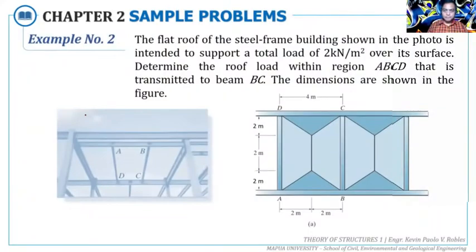Okay, so let's have this example. We have this flat roof of a steel frame building shown in the photo. It's intended to support a total load of 2 kilopascal. That's the load, coming from dead load and likely from live load combined to become 2 kilopascal.